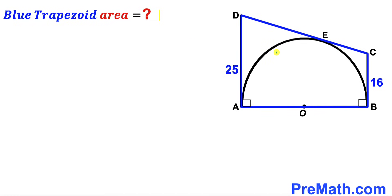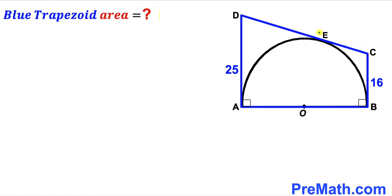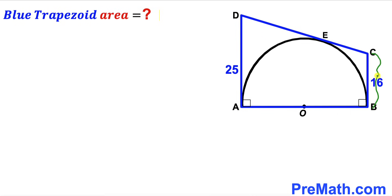Welcome to pre-math. In this video we have a semi-circle with center O fully inscribed in a blue trapezoid ABCD, where E is the point of tangency. The base AD length is 25 units, the other base BC length is 16 units, and our task is to calculate the area of this blue trapezoid ABCD.